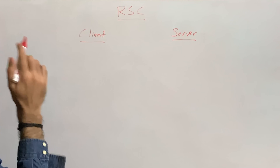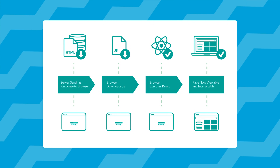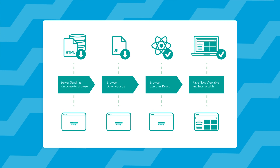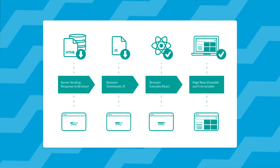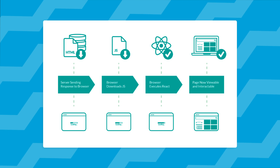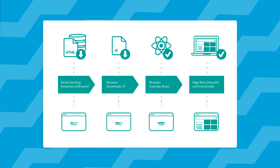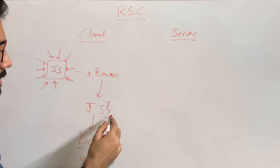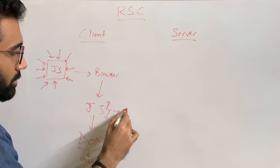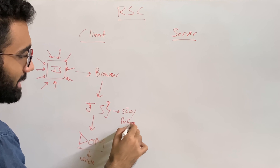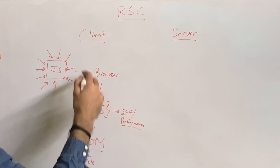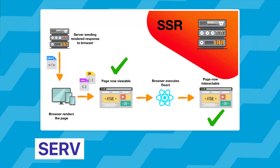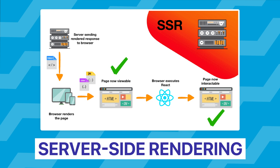Client-side rendering works like this: you have a JS payload consisting of all your React components, compressed and bundled, which you send to the browser. The browser executes that JavaScript and constructs the DOM visible to the user. This JS execution phase is where things go wrong for SEO and performance, because executing JavaScript takes more time compared to just reading HTML and CSS to build a page.